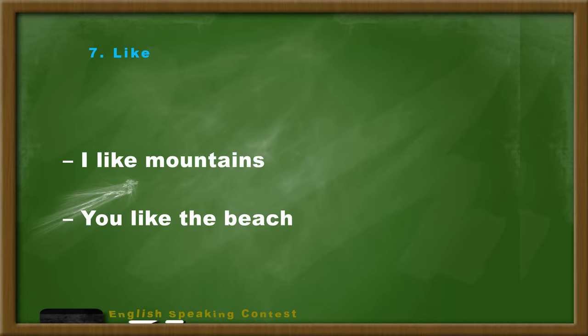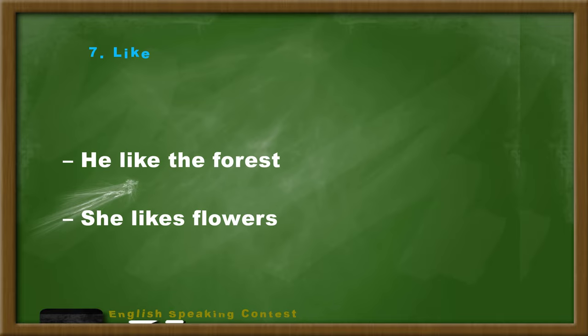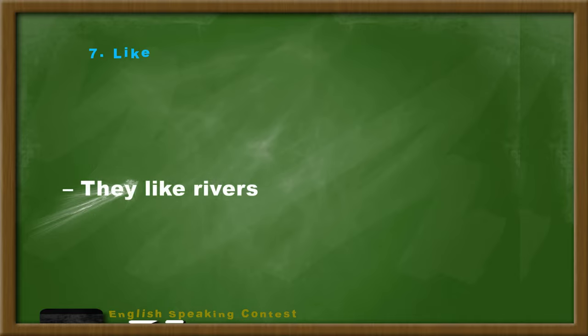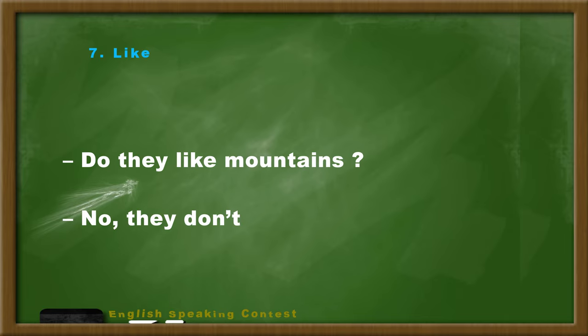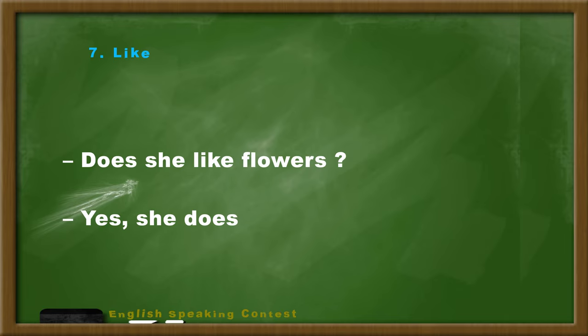I like mountains. You like the beach. He likes the forest. She likes flowers. They like rivers. Do you like mountains? Yes, I do. Do they like mountains? No, they don't. Does he like the beach? No, he doesn't. Does she like flowers? Yes, she does.